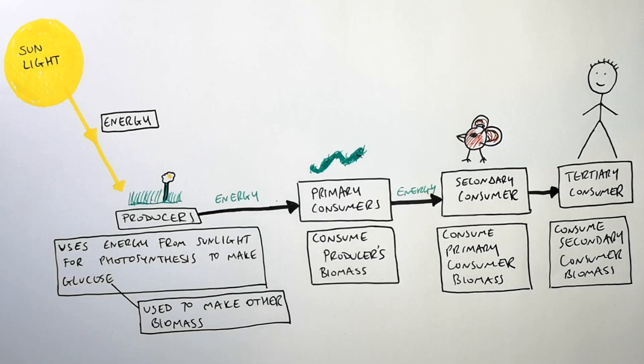Which organisms are herbivores, carnivores or both? Omnivores. Primary consumer here, the caterpillar, only eats producers. So they only eat plants. So they are herbivores.